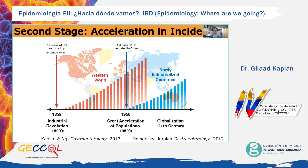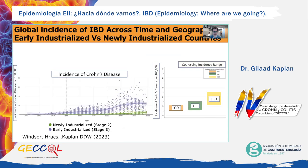During the last half of the 20th century, the vast majority of studies demonstrated statistically significant increasing incidence in the Western world. In contrast, few population-based studies on the epidemiology of IBD were published in the 20th century from developing countries outside the Western world. At the turn of the 21st century, a paradigm shift occurred: since 2000, incidence rates have shifted in North America and Europe, with the majority of studies showing stable or falling incidence. This scatterplot shows incidence per 100,000 over the last century for Crohn's disease. The purple symbols represent data from North America, Europe, and Australia, coalescing in a range of around 5 to 15 per 100,000 for both Crohn's disease and ulcerative colitis — what we call the coalescing incidence range.